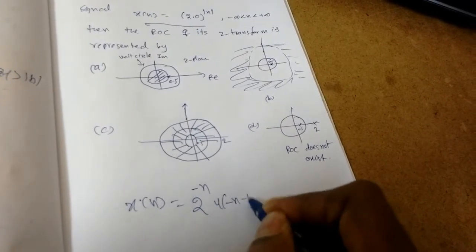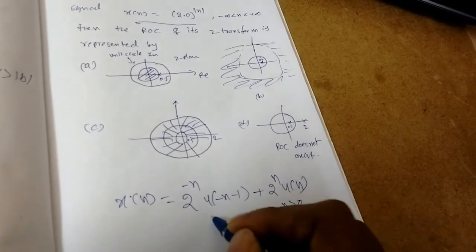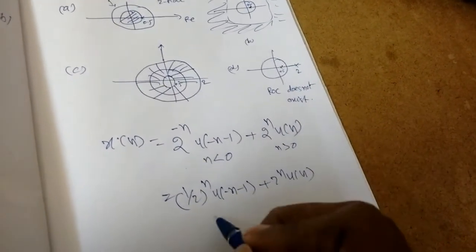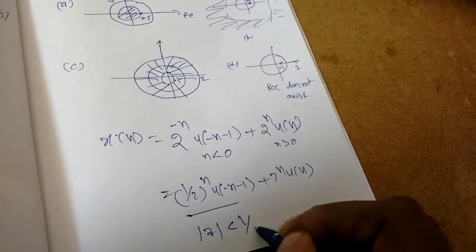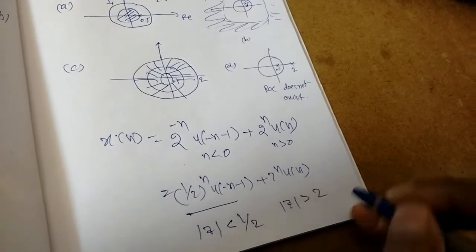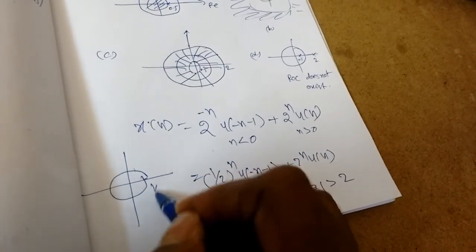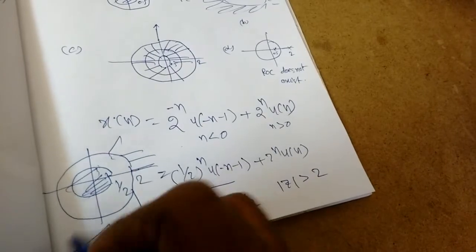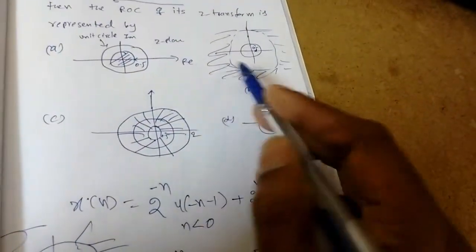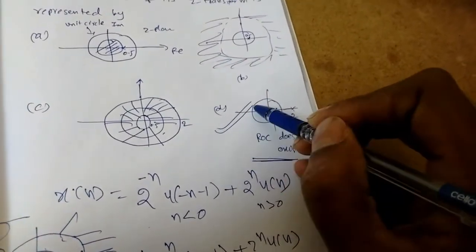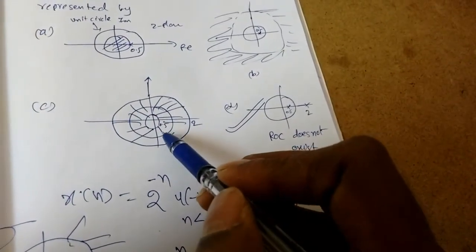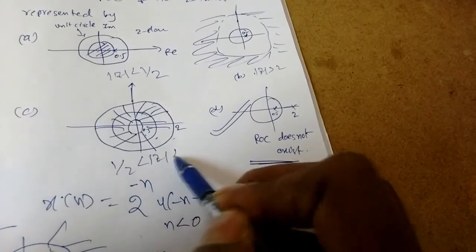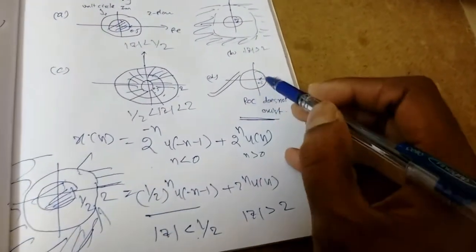We write x of n as 2 power minus n times u of minus n minus 1, plus 2 power n times u of n. This can also be written as 1 by 2 power n times u of minus n minus 1, plus 2 power n times u of n. For the left-sided sequence, the ROC is mod z less than 1/2. For the right-sided sequence, the ROC is mod z greater than 2. There is a circle of radius 1/2 and a circle of radius 2. The condition mod z less than 1/2 and mod z greater than 2 have no overlap — there is no common ROC. So option D is correct: the ROC does not exist for this sequence.